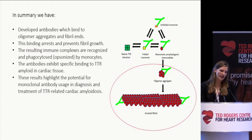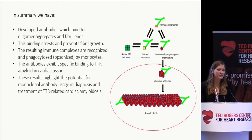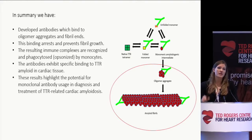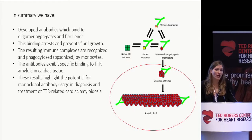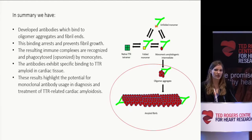In summary, we have now developed antibodies which are able to bind to oligomer aggregates and the fibril ends, and this binding has been shown to both arrest and prevent fibril growth. These resulting immune complexes, using our THP1 monocyte assays, were able to be phagocytized or opsonized by our monocytes, thereby inducing an immune response. We have also shown that they are able to bind specifically to TTR amyloid in cardiac tissue. Our results suggest that these monoclonal antibodies will have usage in both diagnostics as well as therapeutics for patients with TTR-related cardiac amyloidosis.